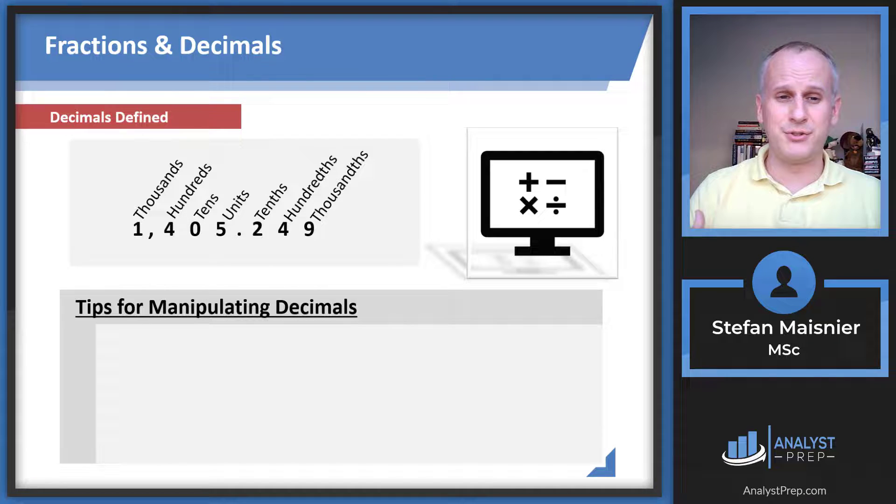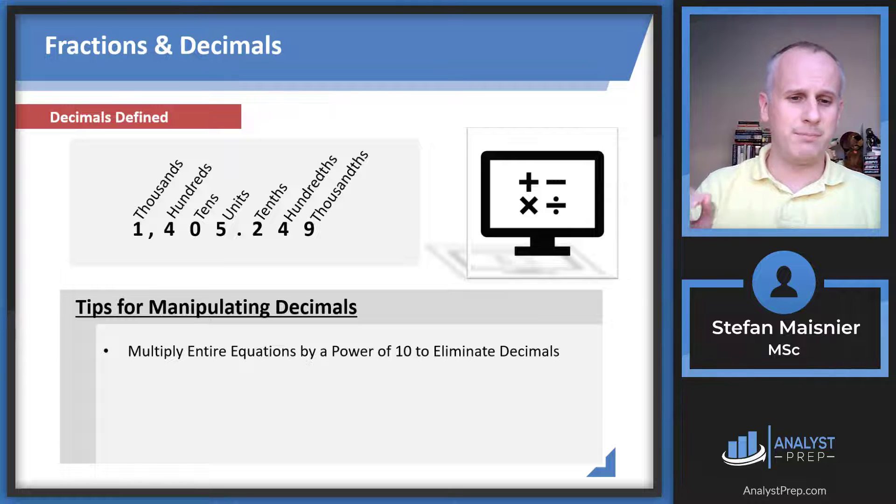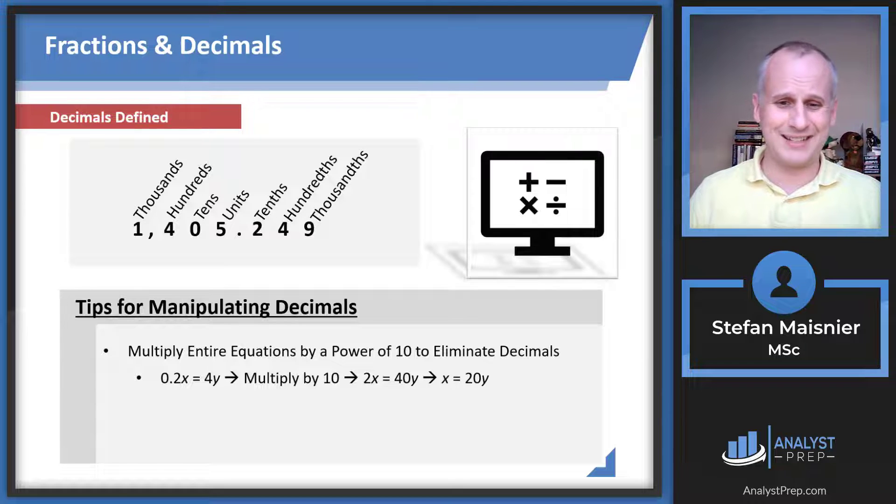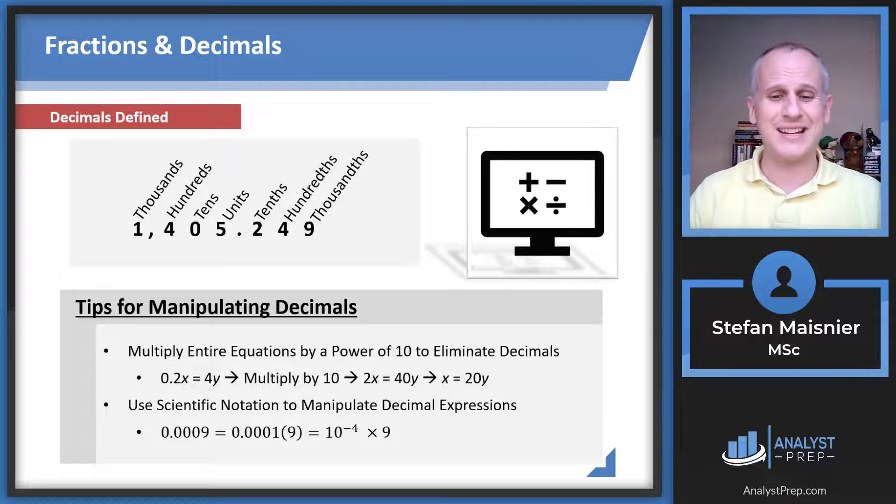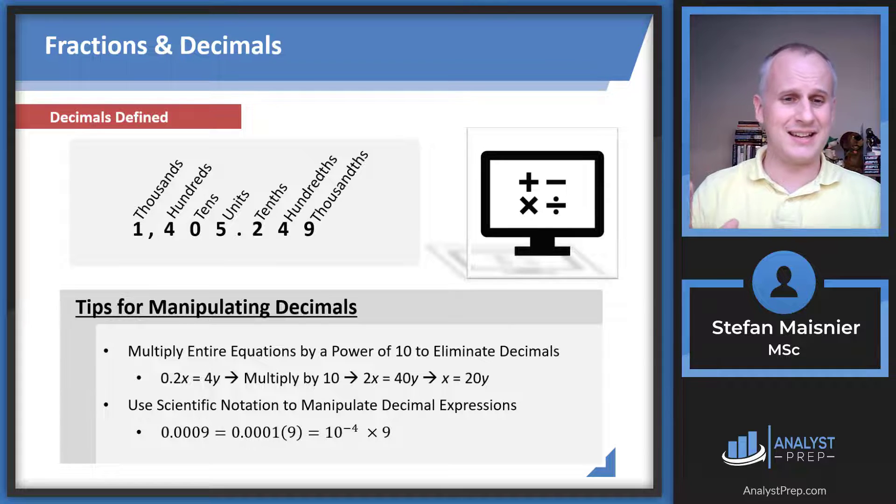For manipulating decimals, you shouldn't find many instances where you have to do manipulation, and we want to avoid it wholesale if possible. Generally plan to multiply entire equations by a power of 10 to eliminate a decimal. For example, 0.2x equals 4y, multiply by 10 to get 2x equals 40y, then x equals 20y. Get rid of decimals first. Alternatively, you can use scientific notation. 0.0009 is 10 to the negative 4 times 9.